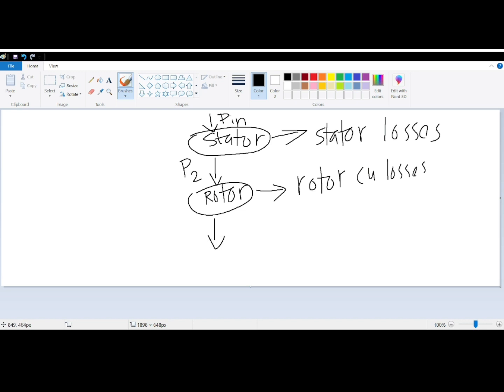Now after supplying this part to the losses, remaining part of P2 is converted into mechanical which is called gross mechanical power which is denoted by PM. Motor tries to deliver to the load connected to the shaft. By doing the mechanical transmission part of the PM is utilized to provide mechanical losses.